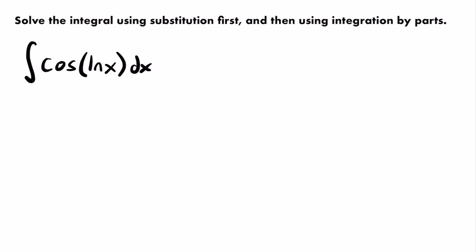Since we'll also be working with integration by parts, which uses variables u and v, I want to reserve u for that method. So instead of u, I'll use a different variable. I'm going to let w equal the natural log of x — that will be our substitution for this integral.